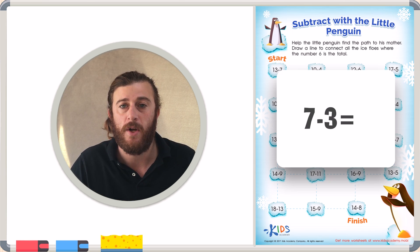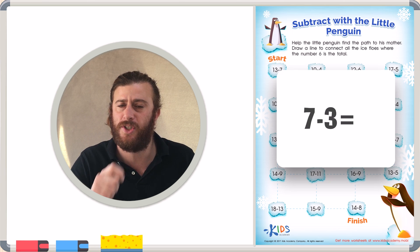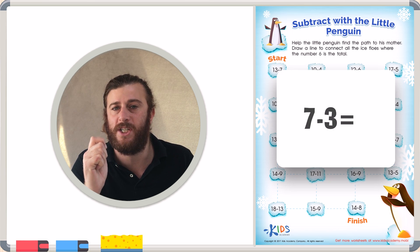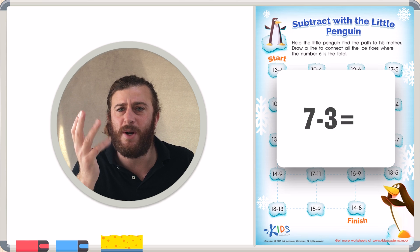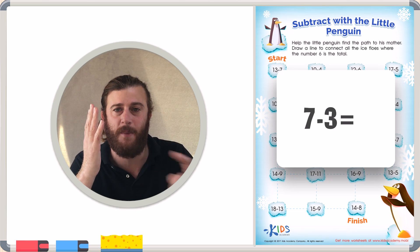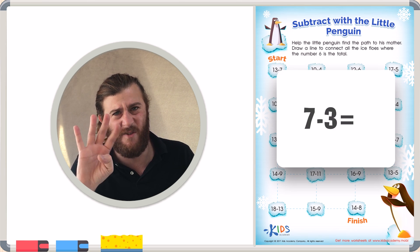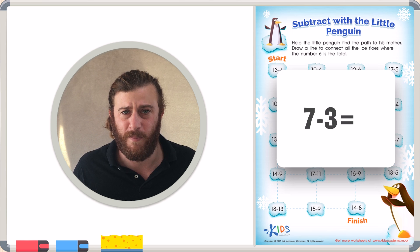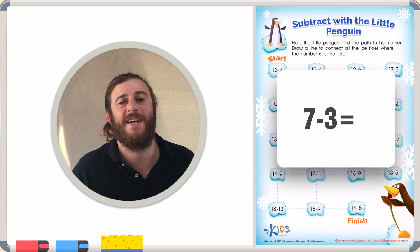7 minus 3. We're going to say the number 7 out loud. 7. And then we'll count backwards till we get to 3. We'll use our fingers to help us keep track of how many times we're counting and however many fingers we're holding up, that'll be the correct answer. Let's try it together.